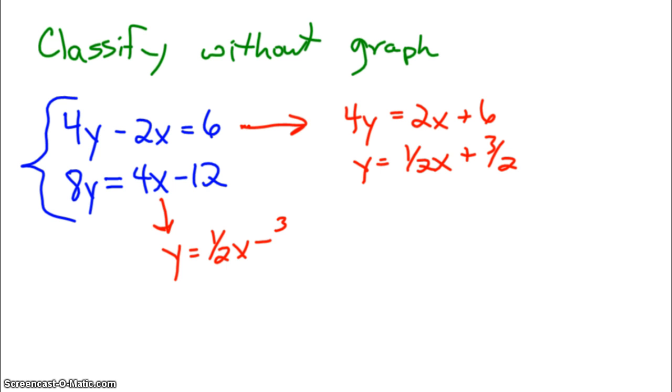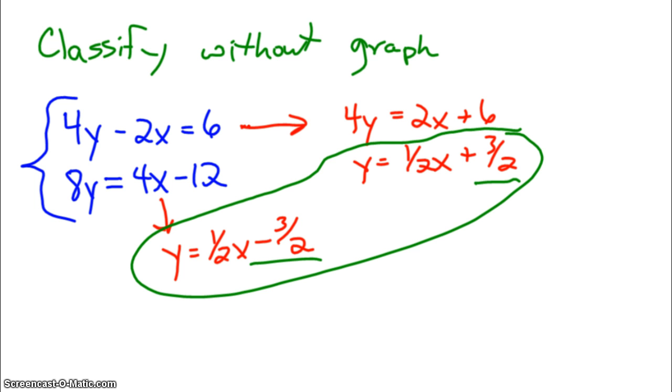So, what we've got here are two lines with the same slope. In both cases, the slope equals one half, but here the intercept is positive 3 halves, and here the intercept is negative 3 halves. So, we've got two lines that have the same slope, but different y-intercepts. That means these lines are parallel, but they never intersect. We have an inconsistent system. That would be the answer to the question, classify without graphing.